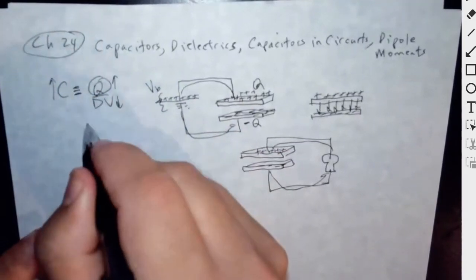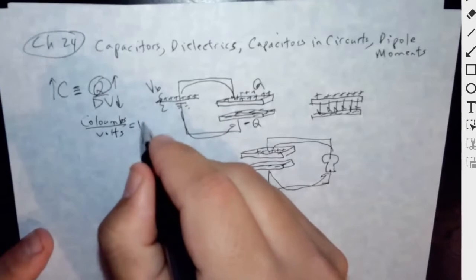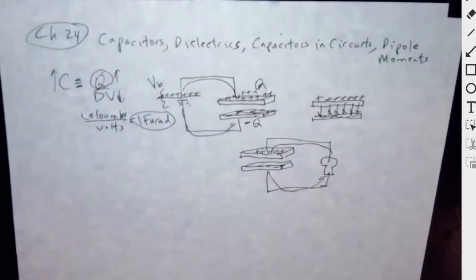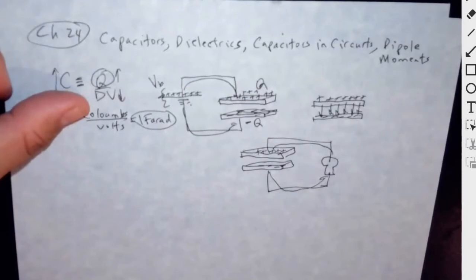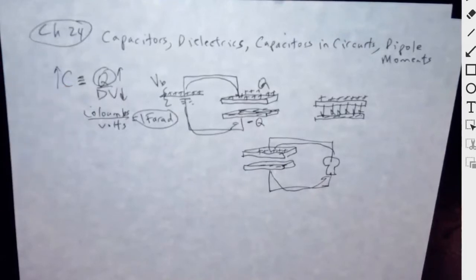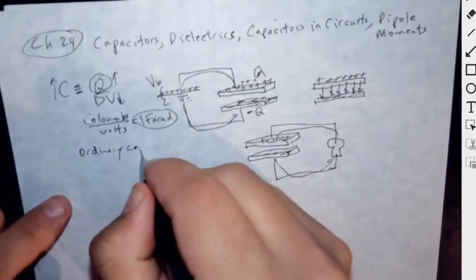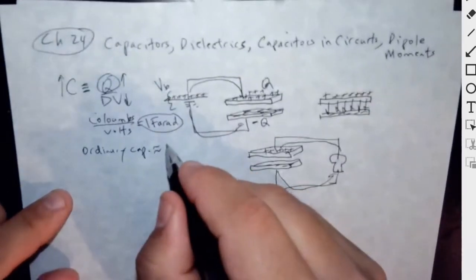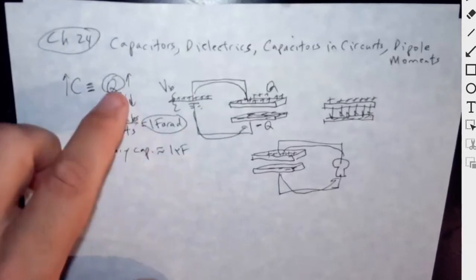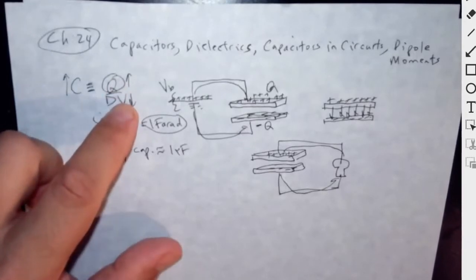The units of capacitance are Coulombs per volt, which equals one Farad. A one-Farad capacitor is actually a really strong capacitor, because the Coulomb itself is a big unit of charge. Most charges we've been working with in electricity examples have been micro-Coulombs or nano-Coulombs. So most ordinary capacitors will have capacitance on the order of a micro-Farad, meaning they store one micro-Coulomb of charge for every volt connected across them.